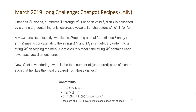The problem states: Chef has n dishes, numbered 1 through n. For each valid i, dish i is described by a string di containing only lowercase vowels — the characters a, e, i, o, and u. A meal consists of exactly two dishes. Preparing a meal from dishes i and j, where i does not equal j, means concatenating the strings di and dj in an arbitrary order into a string m describing the meal. Chef likes this meal if the string m contains each lowercase vowel at least once.